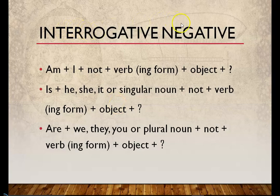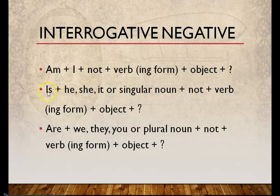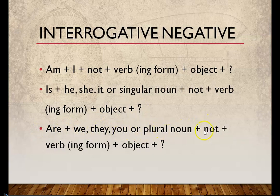Interrogative negative means a question with not. Both rules apply: helping verbs come to the beginning, and not is added after the subject. Formula: Am + subject I + not + ing form of the verb + object + question mark. Is/are used similarly with he/she/it or singular noun, and we/they/you or plural noun, each followed by not + ing form + object + question mark.